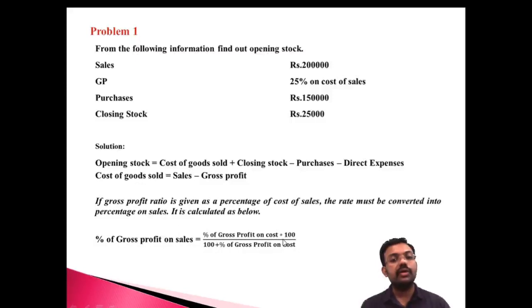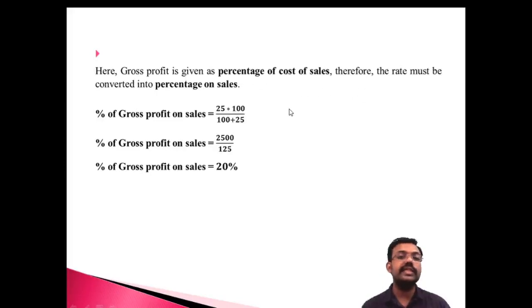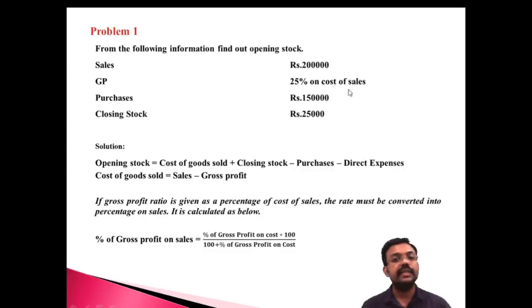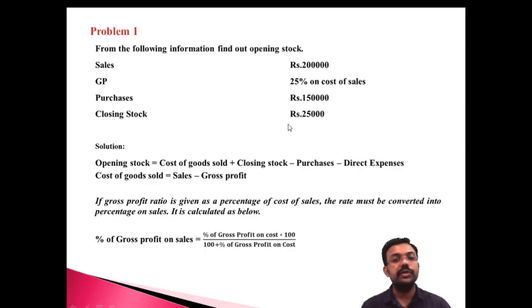Since the gross profit is given as a percentage of cost of sales, we must convert it to a percentage of sales. The conversion formula is: Gross Profit % on cost × 100 ÷ (100 + Gross Profit % on cost) = 25 × 100 ÷ (100 + 25) = 2500 ÷ 125 = 20%. So the gross profit on sales is 20%.